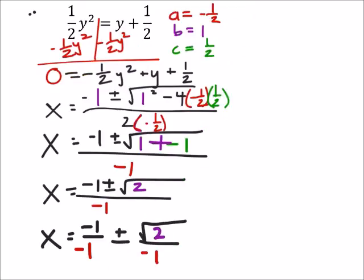And from here I can split this up just because I have that common denominator of negative one and what that does is it makes things a little bit easier. Because now right here I've got a negative one over one which is one, I still have plus or minus, and we do have the square root of two over negative one.